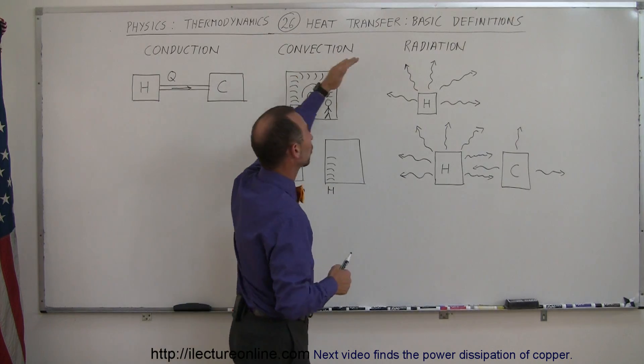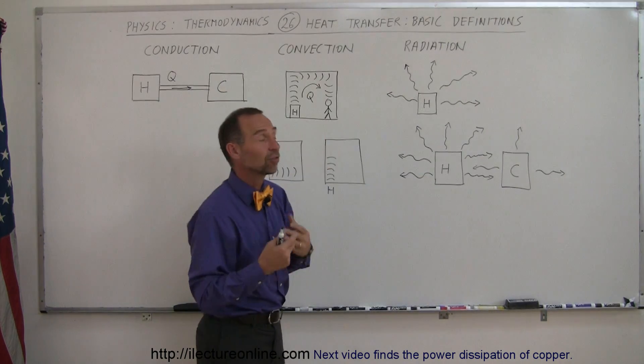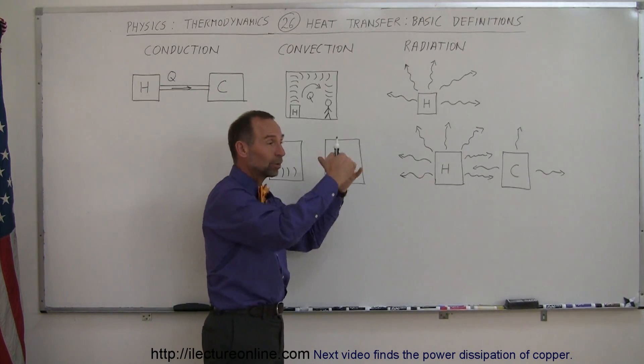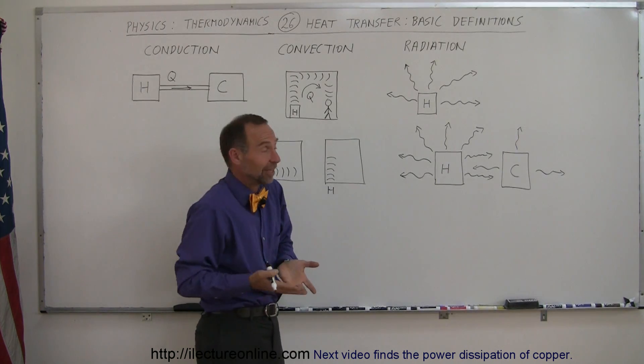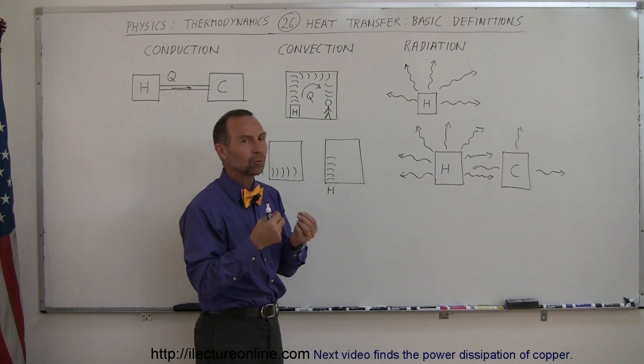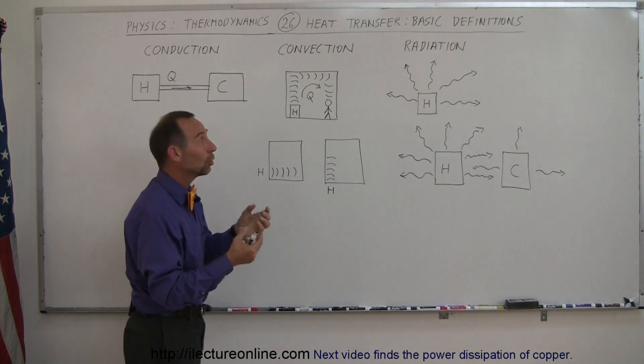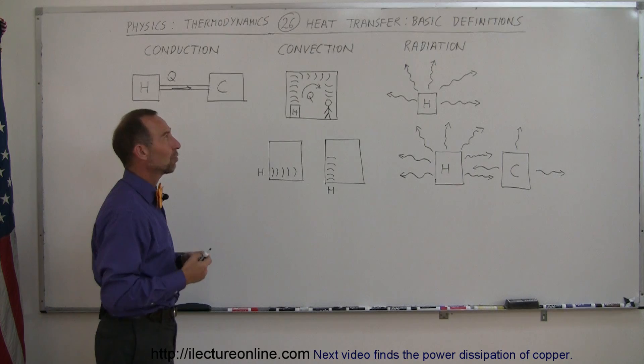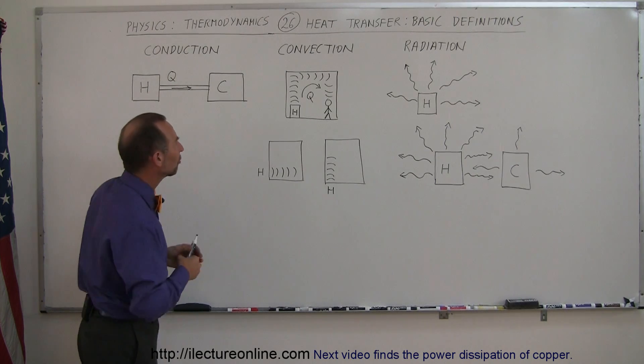As you will see in all three methods—conduction, convection, or radiation—heat will be transferred in such a way that hot objects will tend to cool down and cold objects tend to heat up until everything tends to be in thermal equilibrium. So that's usually the end result, or at least the end goal in nature, of heat transfer.